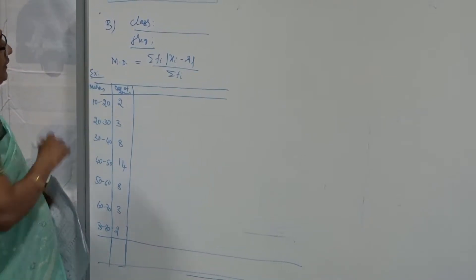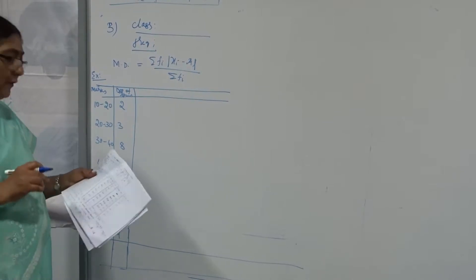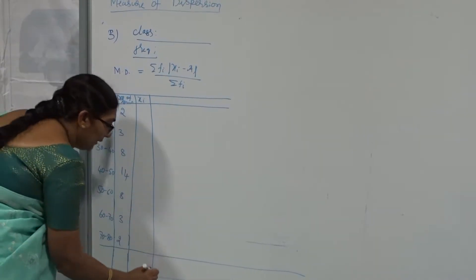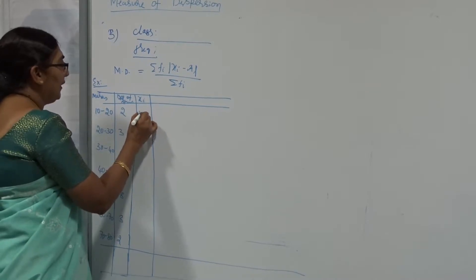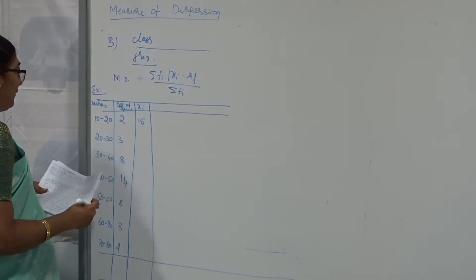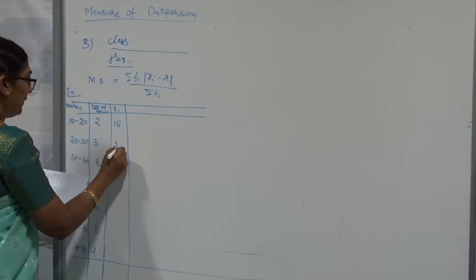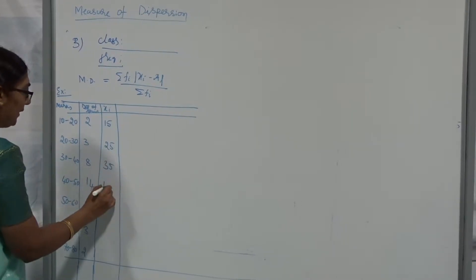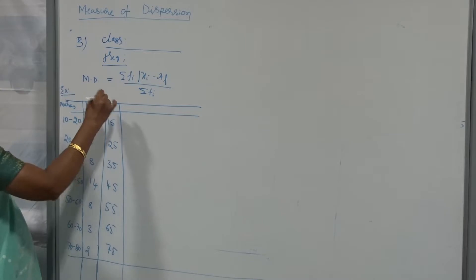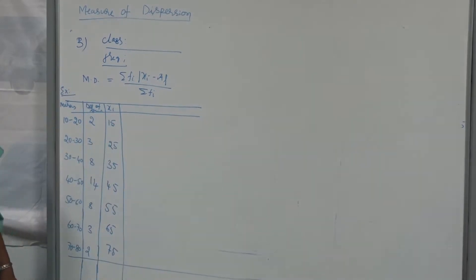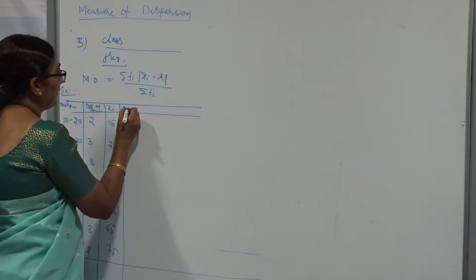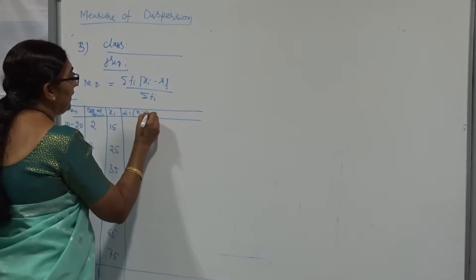If you want to find mean deviation about the mean, first find the mean. Before finding the mean, whenever data is in the form of classes, first find the midpoint values. What is the midpoint of 10–20? It is 15. Then 25, 35, 45, 55, 65, 75. Since this is not a small dataset, instead of going for the direct method, I will use the step deviation method. For step deviation, di = (xi − a) / h.